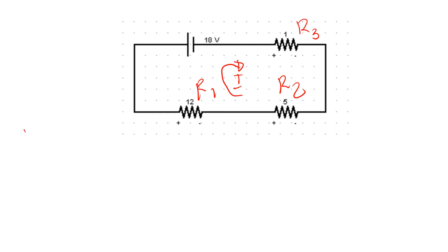Therefore, in order to get the equivalent resistance for resistors connected in series, we just need to add all of their values: R1 plus R2 plus R3. We know the value of R1 is 12 ohms, R2 is 5 ohms, and R3 is 1 ohm. Therefore, my equivalent resistance is equal to 18 ohms.